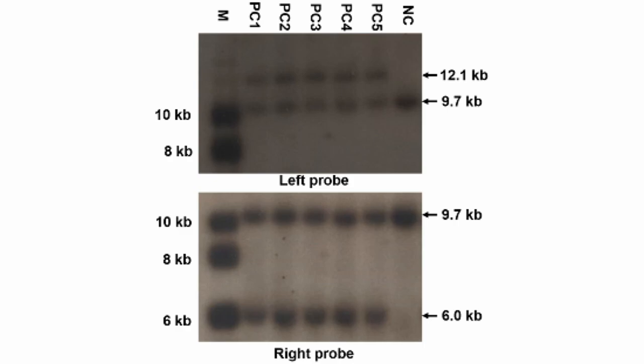Here's an image of the southern blot. The bands on the film here are where these recombination events occurred in the cloned embryonic stem cells. The image here shows the wild type show only 9 KB bands, while the mutated alleles show 12.1 or 6 KB bands.